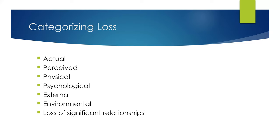Physical loss includes injuries such as loss of a limb or amputation, organ removal like a hysterectomy, or loss of function such as paralysis. Psychological losses are commonly seen in areas of sexuality, control, fairness, meaning, and trust. Loss of youth, loss of limbs, body disfigurement, or loss of body functions can all negatively impact someone's perception of themselves, causing psychological loss — including loss of hope, faith, or dreams.